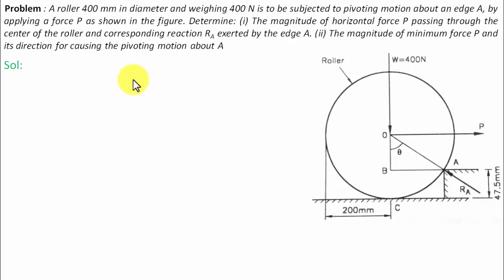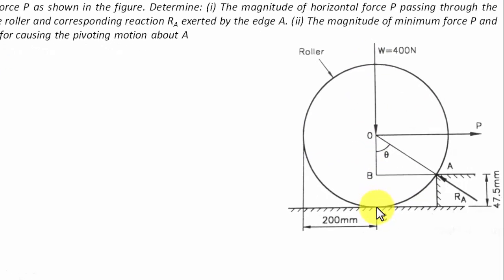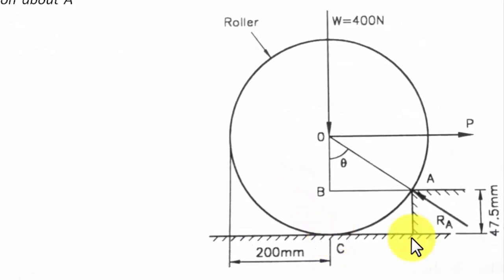All right, so there is this roller whose weight is 400 newtons, obviously acting in the downward direction. It is resting on the ground and the point of contact with the ground is point C. It is also in contact with this block at point A, and there is a force P which is applied in the right hand side direction in a horizontal way.